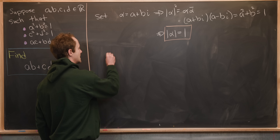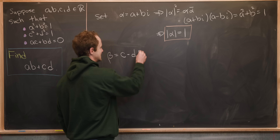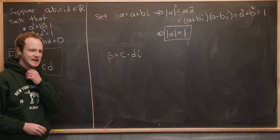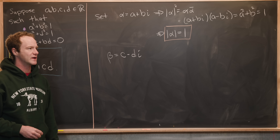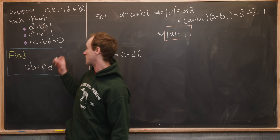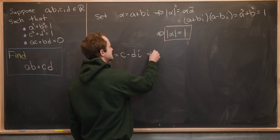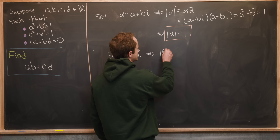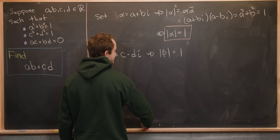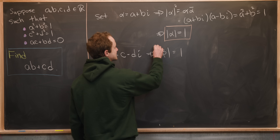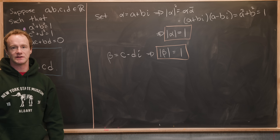Now set beta equal to c minus di. You could set it to c plus di, but this form helps with the arithmetic given what we're working with. Notice that the modulus of beta is equal to one by a very similar process to what we just did showing the modulus of alpha is one.